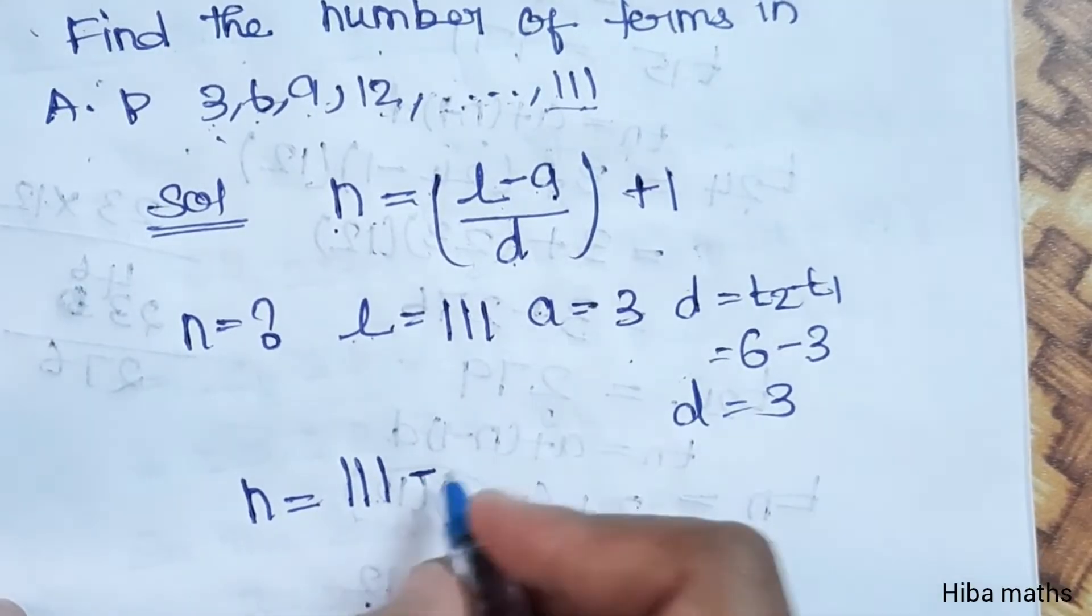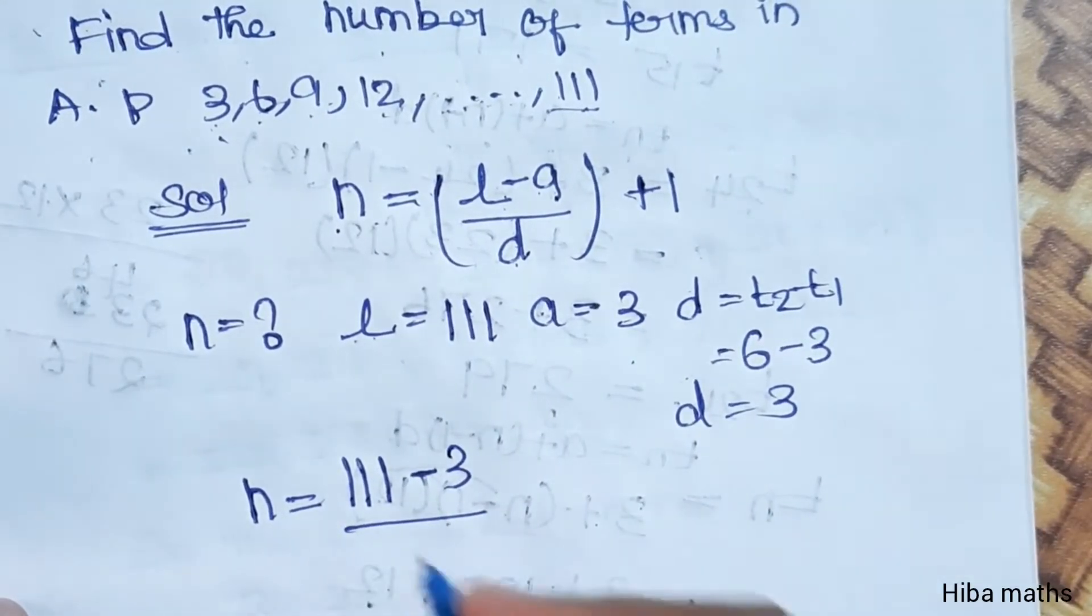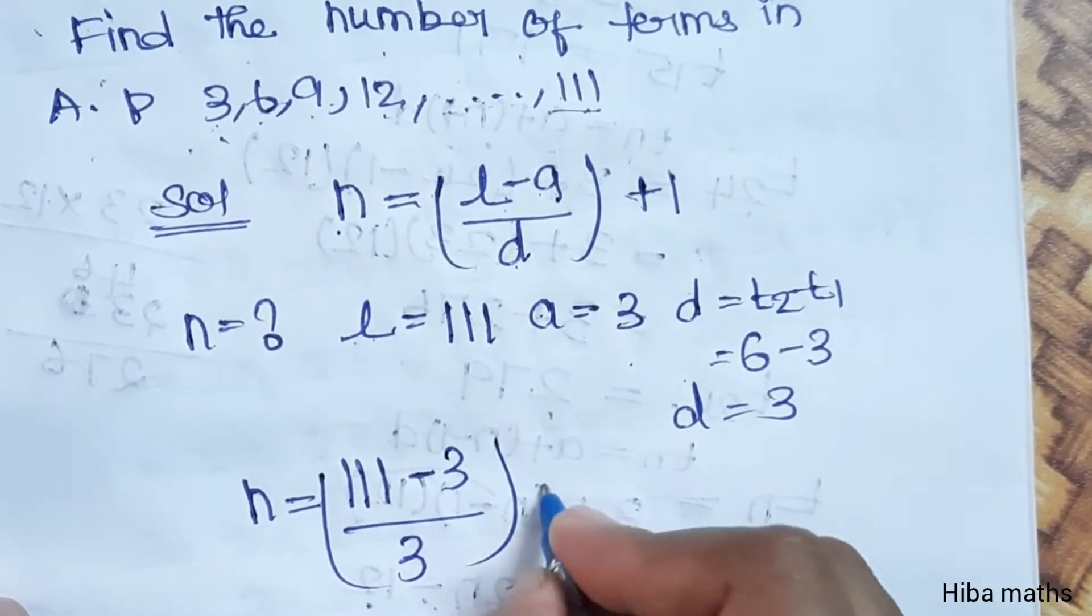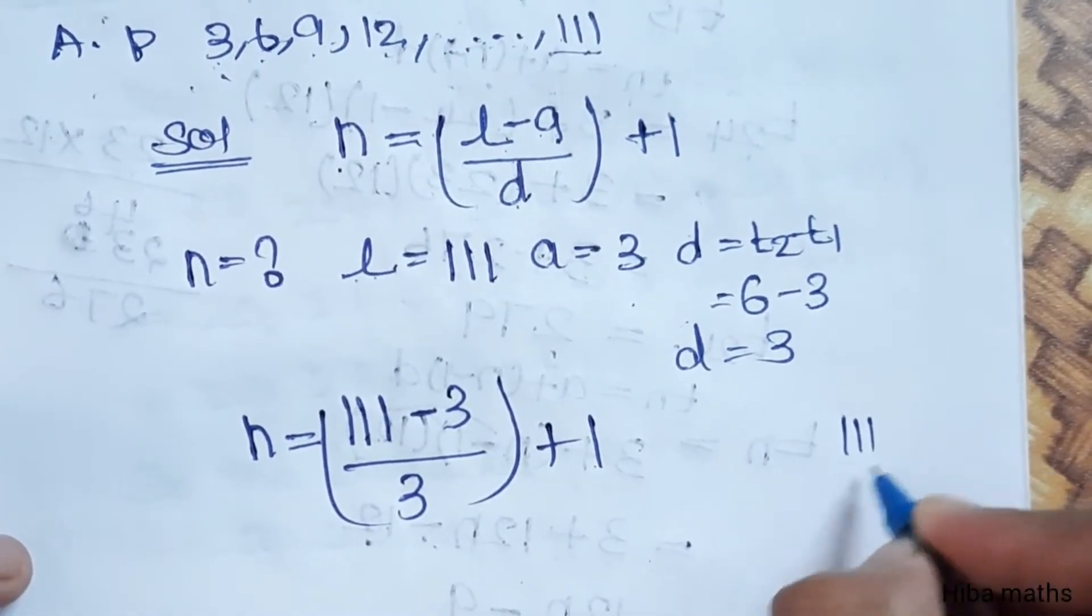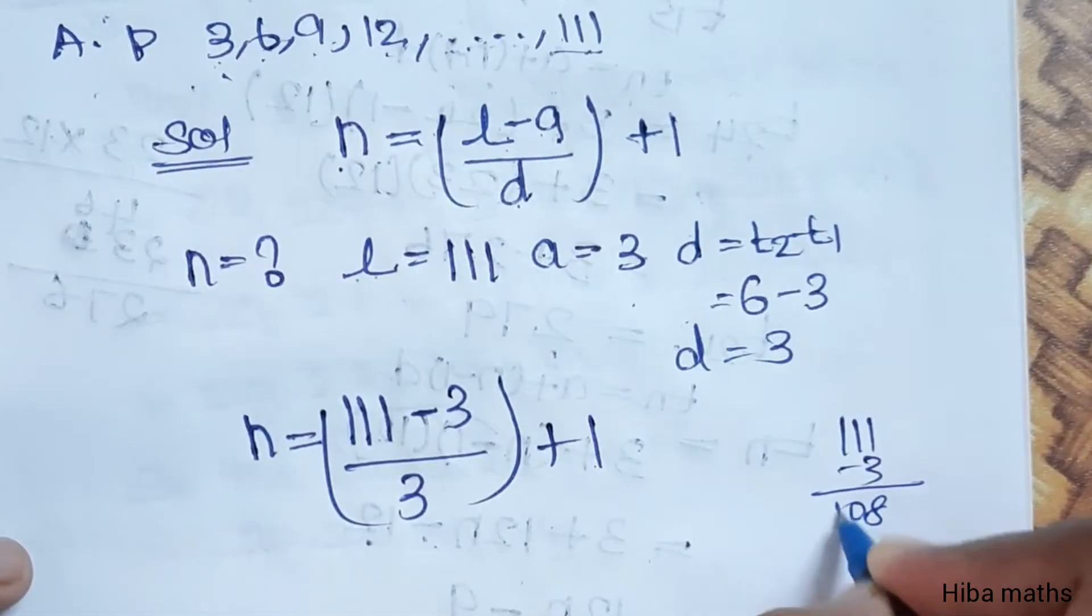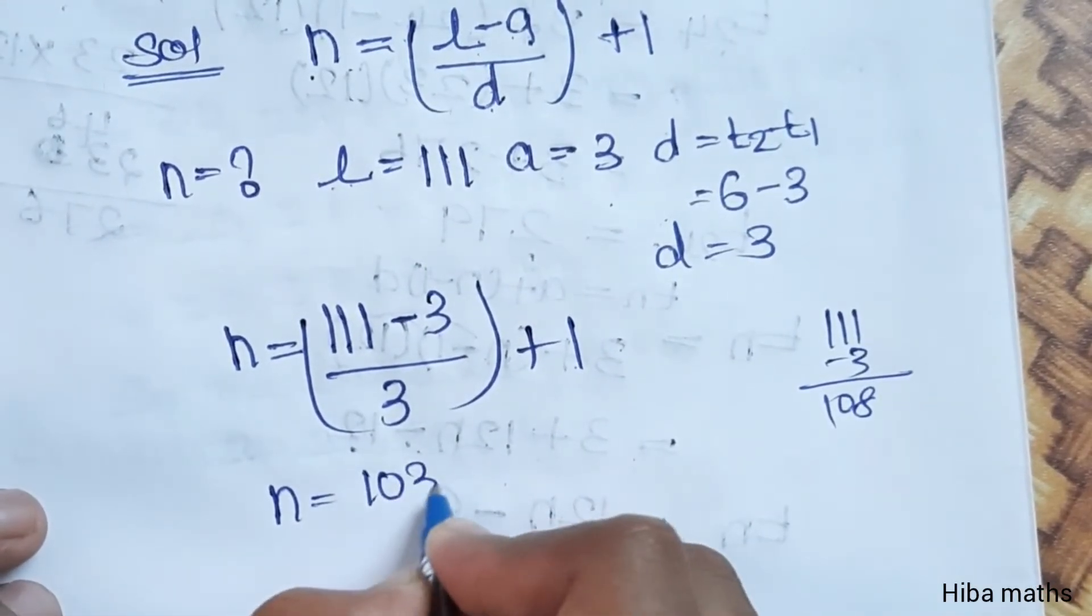n equals 111 minus 3, divided by 3, plus 1. So 111 minus 3 is 108.